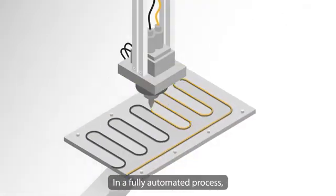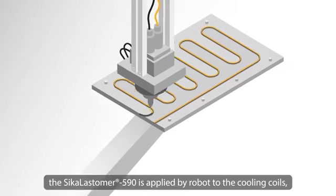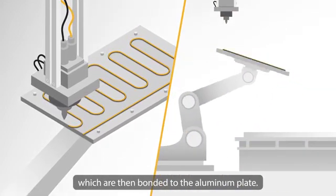In a fully automated process, the SikaLastomer 590 is applied by robot to the cooling coils which are then bonded to the aluminum plate.